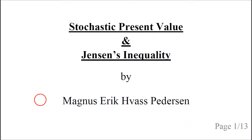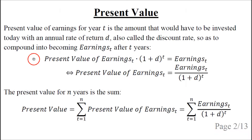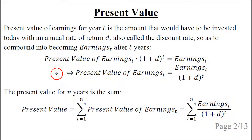Hello, my name is Magnus Pedersen. This talk is about Stochastic Present Value and Jensen's Inequality. The present value of earnings for year T is the amount that would have to be invested today, with an annual rate of return D, also called the discount rate, so as to compound into becoming earnings T after T years. We can rewrite it so the present value of earnings T equals earnings T divided by 1 plus the discount rate raised to the power of T.